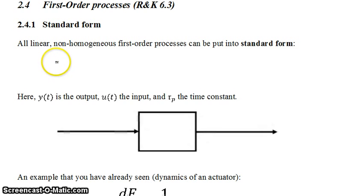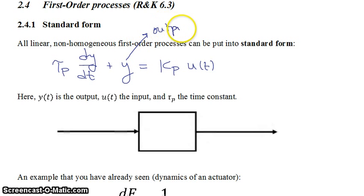So the standard form looks like this: you have a time constant tau p times your first-order derivative dy dt plus the function y is equal to a constant kp times u of t. In this case, y is the output, u is the input to your process, tau p is the time constant, and kp is what is called the process gain.